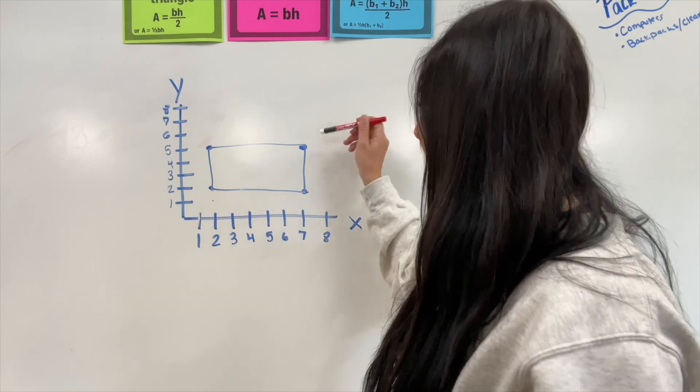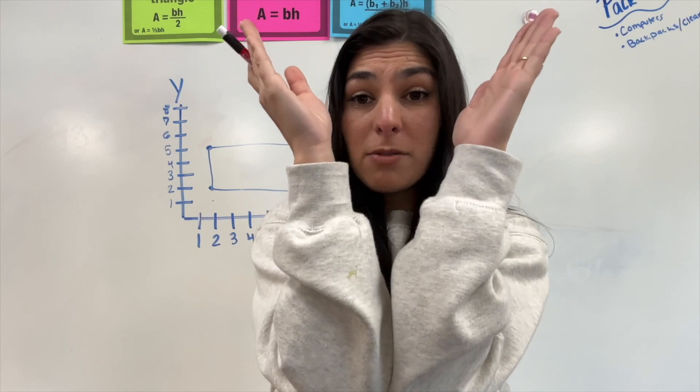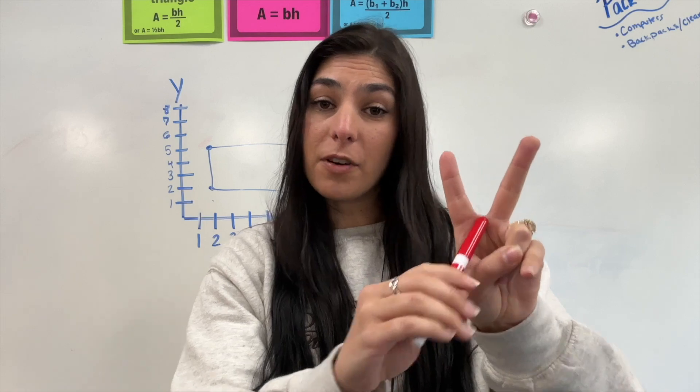And then next, these little dots are actually called vertices. So, make a V with your arms, your elbows, or where they connect, that's the vertice. Same with your fingers. Where they connect is the vertice.